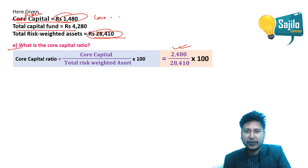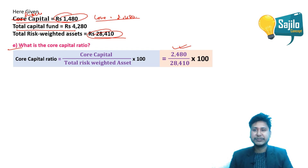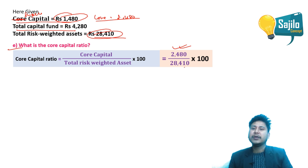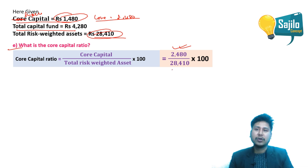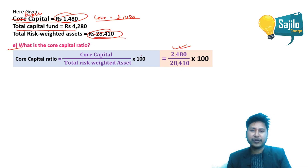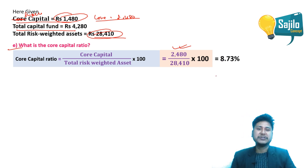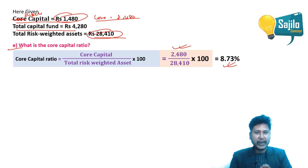Applying the formula: core capital equals 2,480; total risk-weighted assets equals 28,410. Core capital ratio equals 2,480 divided by 28,410, multiplied by 100, which gives 8.73%. Therefore the core capital ratio equals 8.73%.